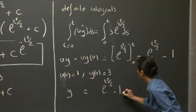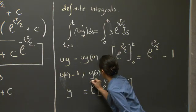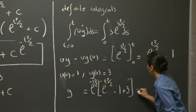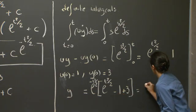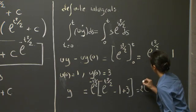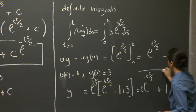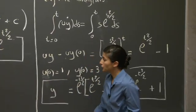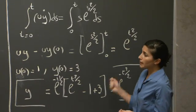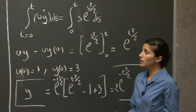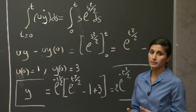Bringing the minus 3 to the other side gives plus 3, then multiplying by e^(-t²/2), we get y = 1 + 2·e^(-t²/2) — the same solution as before. Using both the definite and indefinite integral approaches, we recover the same result. The main point of this problem was to practice the integrating factor method and both integration approaches. This ends the problem, and I'll see you next time.